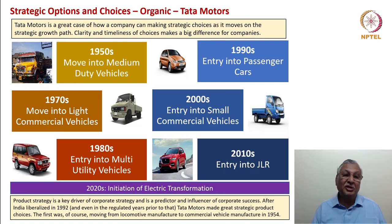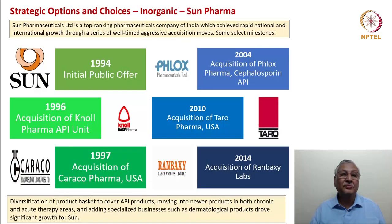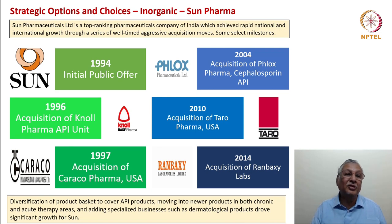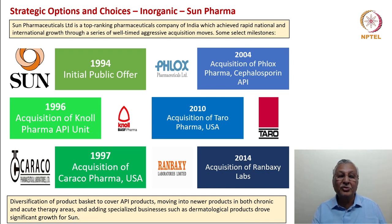The subject of strategic options and choices and the timeliness of these moves is extremely important. That this level of strategic change and expansion could take place with entirely organic infrastructure is a tribute to the wisdom of J.R.D. Tata, Sumant Mulgaonkar, Pratap Tata and various other leaders who helped Tata Motors from the 1950s. Taking the example of Sun Pharmaceuticals, a top-ranking Indian pharmaceutical company, the company achieved rapid national and international growth through a series of well-timed aggressive acquisition moves. In 1994 it made its initial public offer; in 1996 it acquired the Knoll Pharma API unit, moving from dosage forms into APIs.